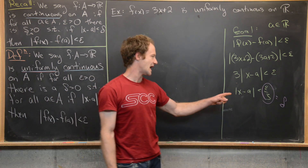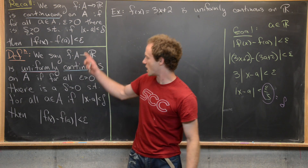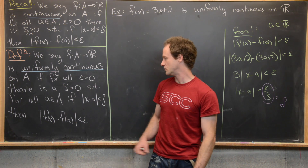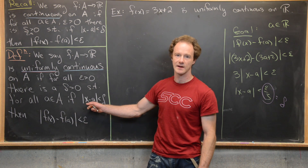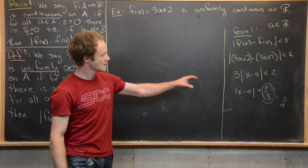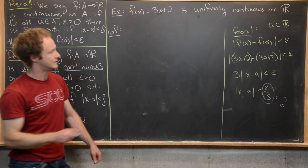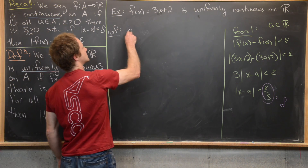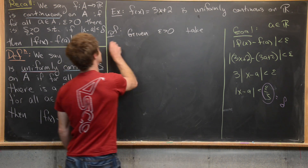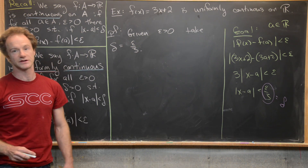You might say there's an a in this inequality in the |x - a| part, but that's part of the 'if-then' statement at the end of the definition of uniform continuity — so that's okay. We just can't have dependence on a on the right-hand side of the inequality. Now that we've got this setup, we're ready to write the proof. Given epsilon greater than zero, we take delta equal to epsilon over three, based on our calculation.